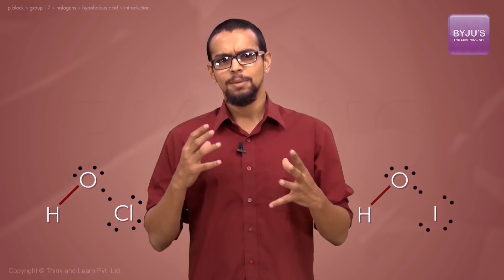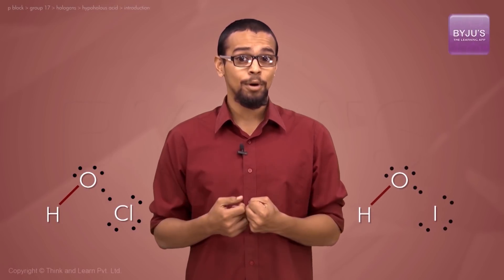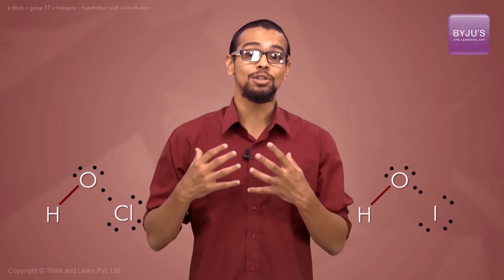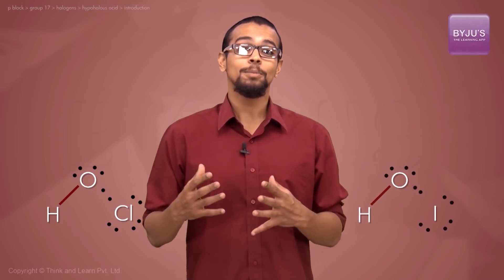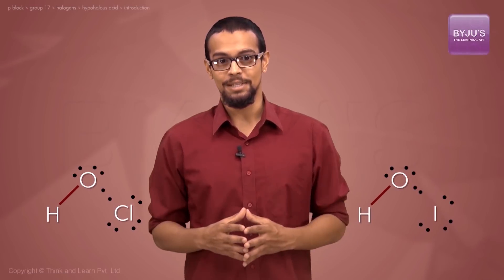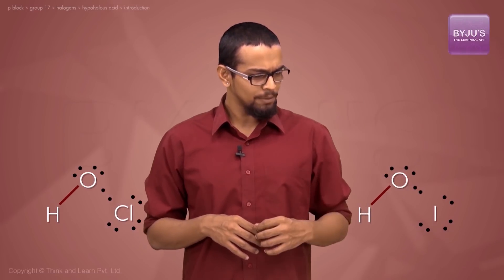In the OH bond, if oxygen is strongly pulling electrons, the OH bond can easily break away to give an acidic substance. Consider a higher electron-dense oxygen bonded with hydrogen versus a lower electron-dense oxygen bonded with hydrogen.